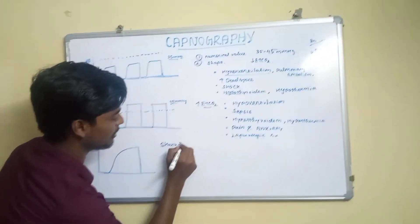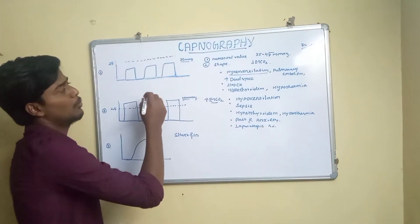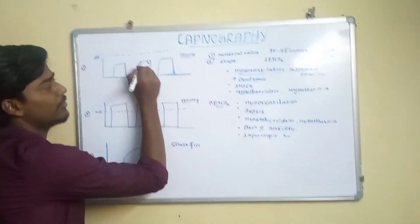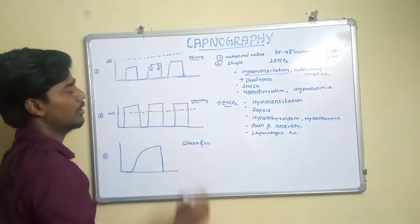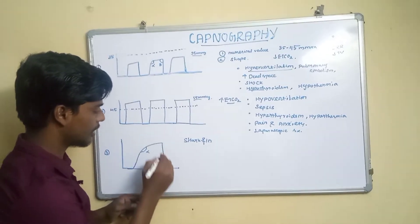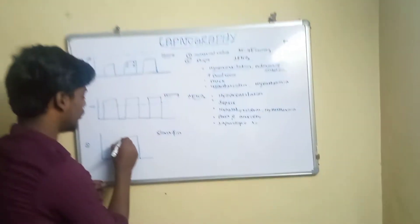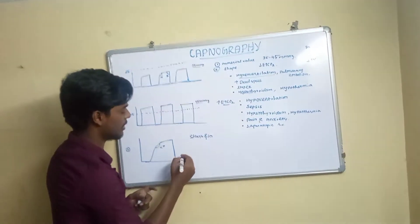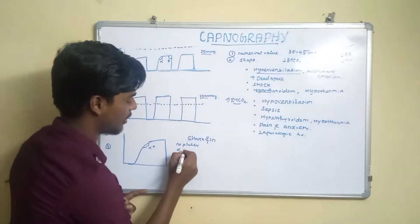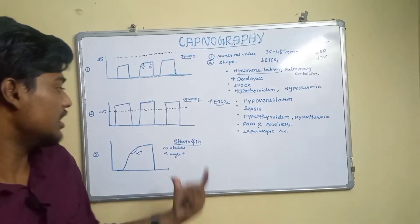In the same situation, pain and anxiety have a different appearance on capnography — a shark fin appearance. So we are looking at the entire graph from two angles. The first is the alpha angle. If you look at this graph, the alpha angle is increased, and the appearance is a shark fin appearance — that is, the plateau phase is absent and the alpha angle is increased.